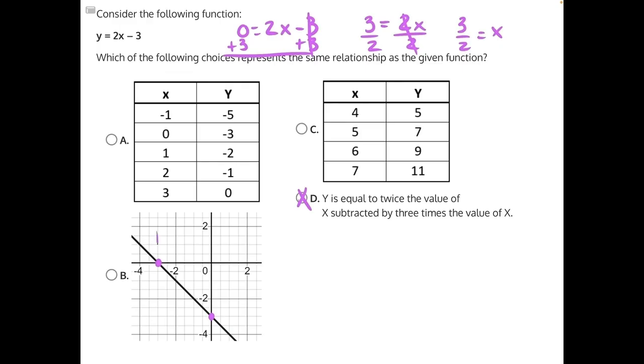The x-intercept in this graph is at negative 3, but this should be at positive 3 over 2, which is about one and a half, or really exactly equal to one and a half. So we should have our point right about here instead of over here, so that makes answer choice B incorrect.